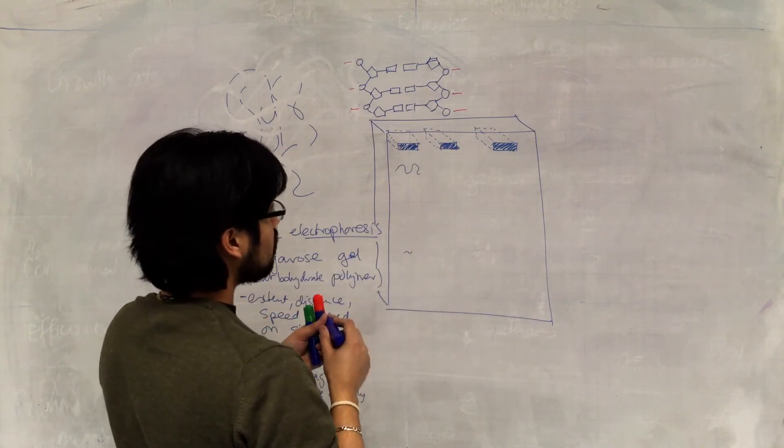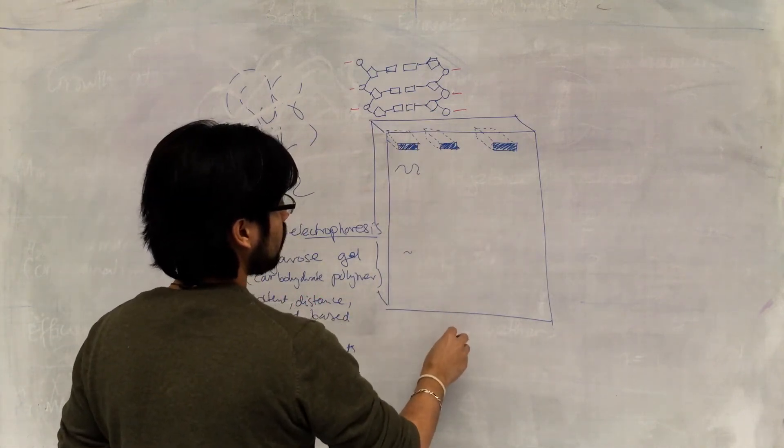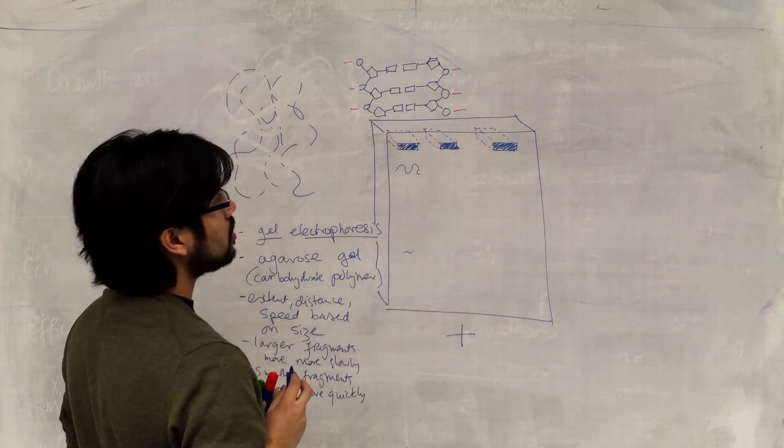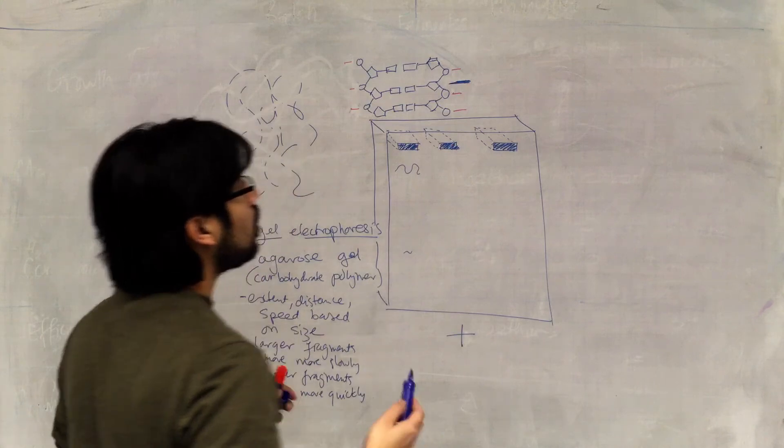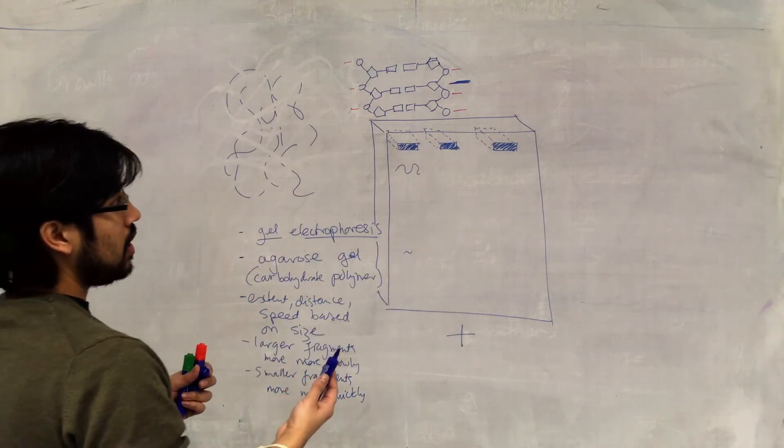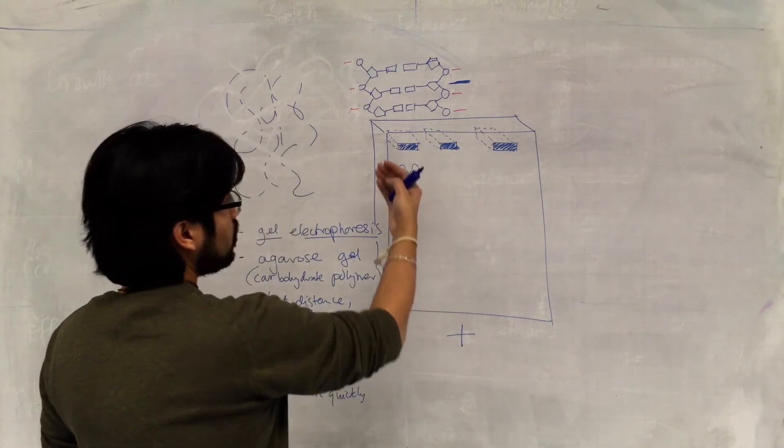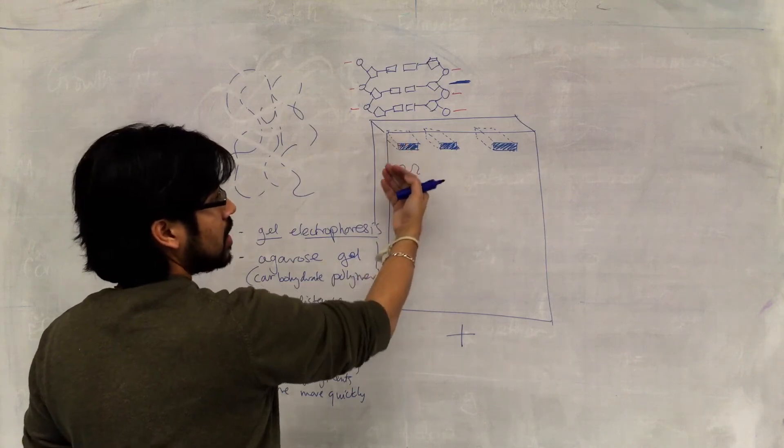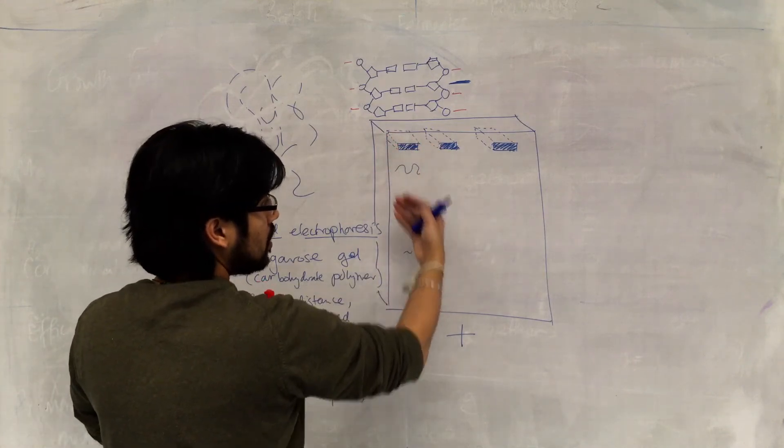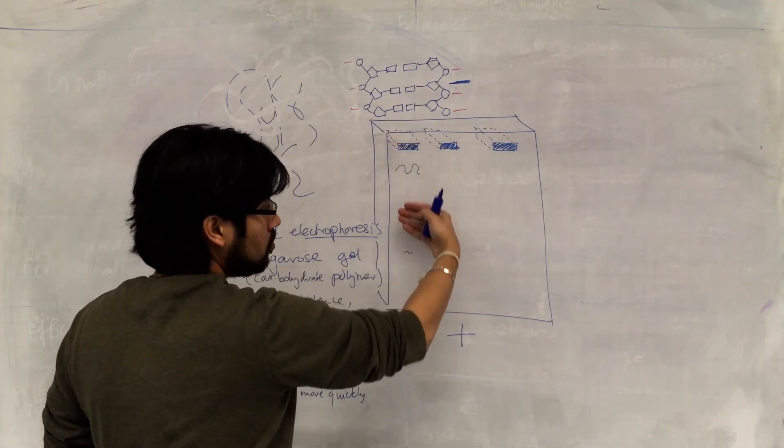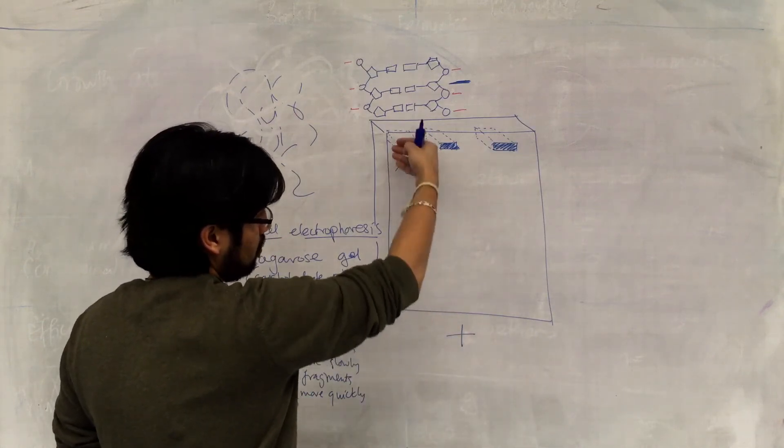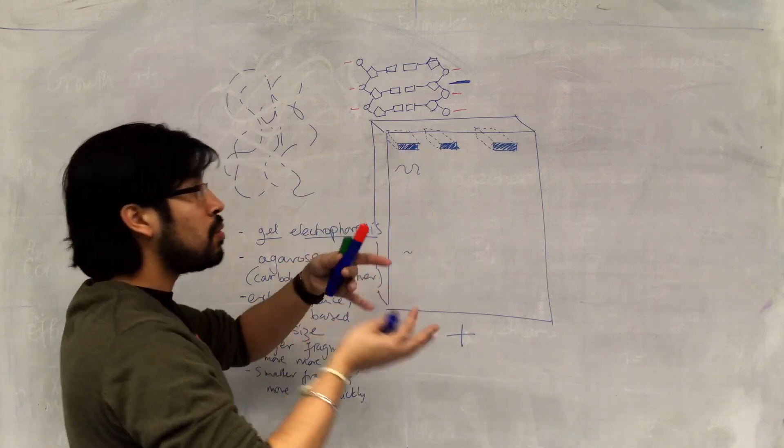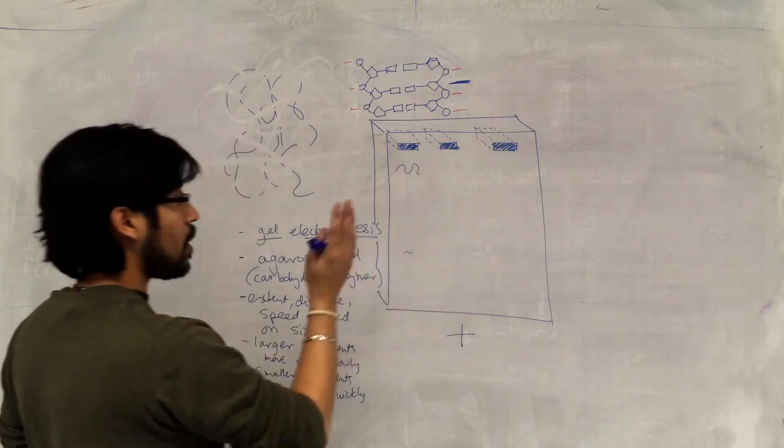Because we can make the DNA molecules move in a certain direction by placing an electric field across the gel, such that there's a positive charge on this side and there's a negative charge on the other side. And in that way, the negatively charged DNA molecules will then be induced to move towards the positive charge.